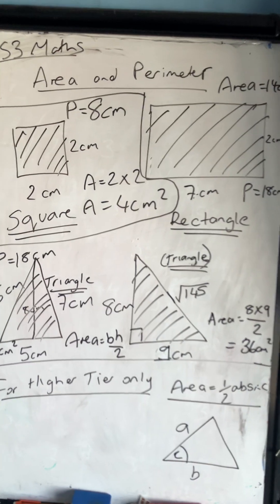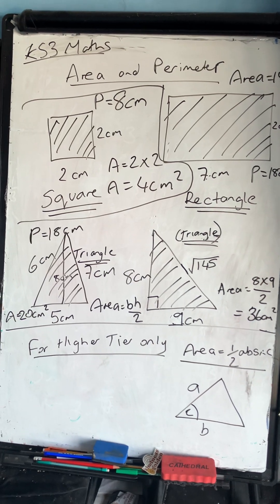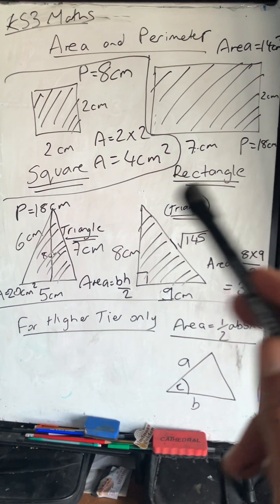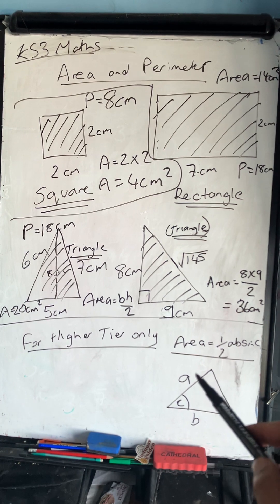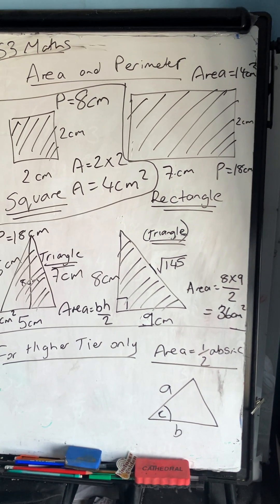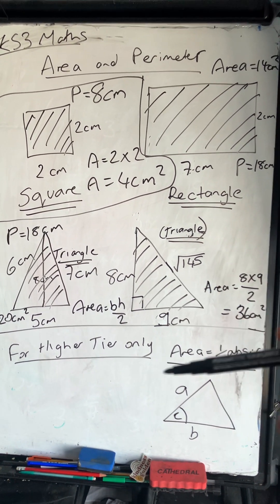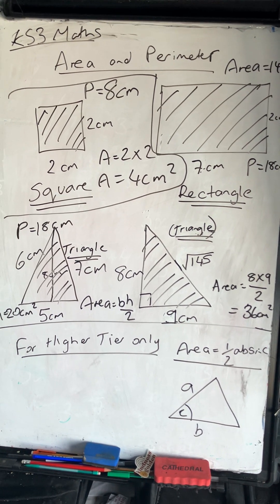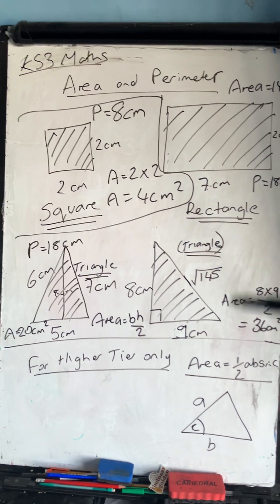That's how to work out the area and perimeter of 2D shapes — specifically a square, rectangle, and triangle. For higher tier students, the formula for the area of a non-right-angle triangle is ½ab sin C. The area of a right-angle triangle is base times height divided by two. The ½ab sin C formula is explicitly for higher tier and pure maths — note it's half times the two corresponding sides times the sine of the included angle.